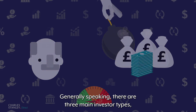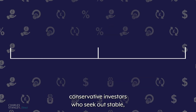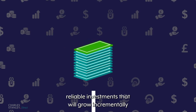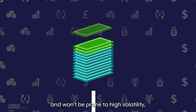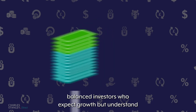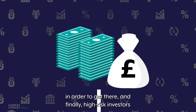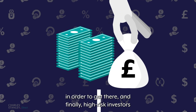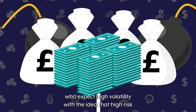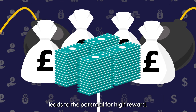Generally speaking, there are three main investor types: conservative investors, who seek out stable, reliable investments that will grow incrementally and won't be prone to high volatility; balanced investors, who expect growth but understand the ups and downs they may have to face in order to get there; and finally, high-risk investors, who expect high volatility with the idea that high risk leads to the potential for high reward.